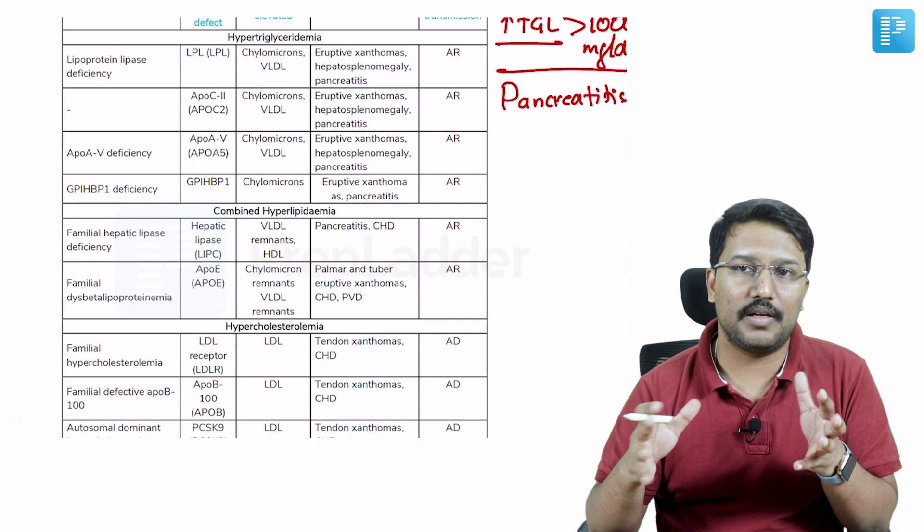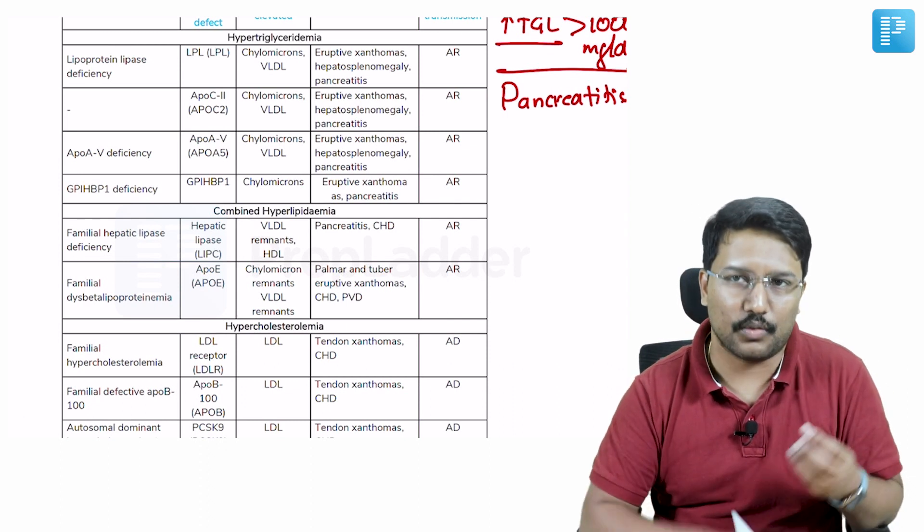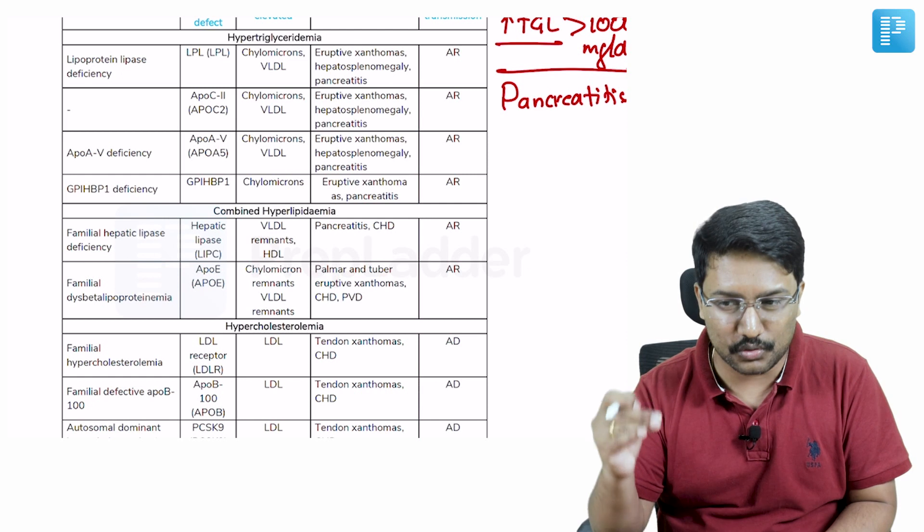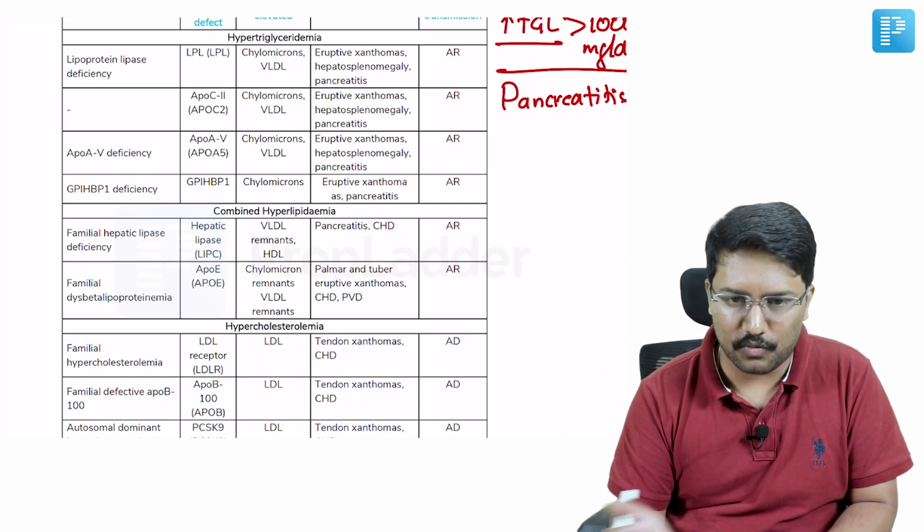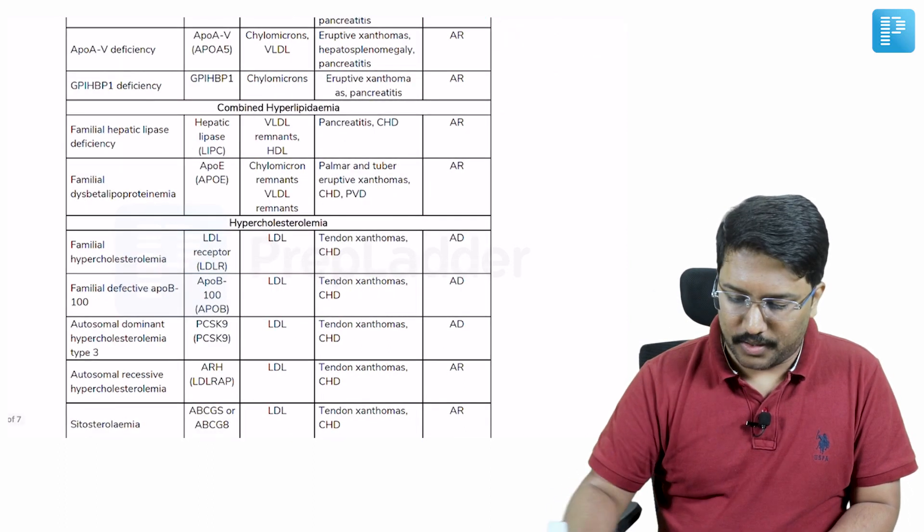I couldn't probably get to know that the majority are autosomal recessive and only few are autosomal dominant if I just go through individual abnormalities from the standard textbook. But looking at the treasure, I can develop a memory map.